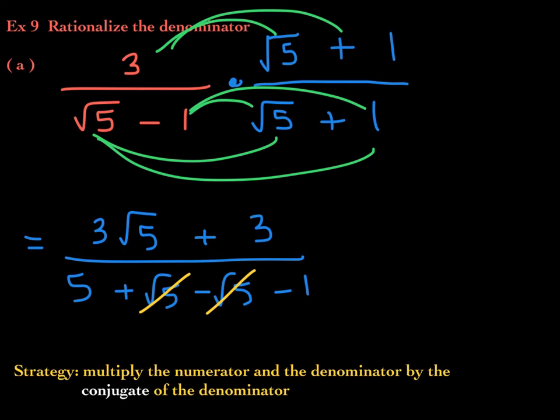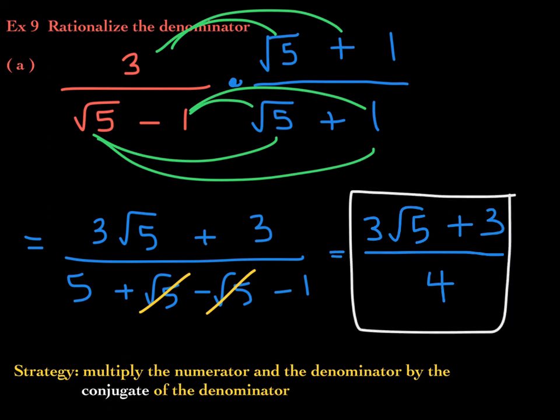The numerator is 3 times the square root of 5 plus 3, and the denominator is 5 minus 1, which is 4. This is the simplified form of the expression because it is rationalized.